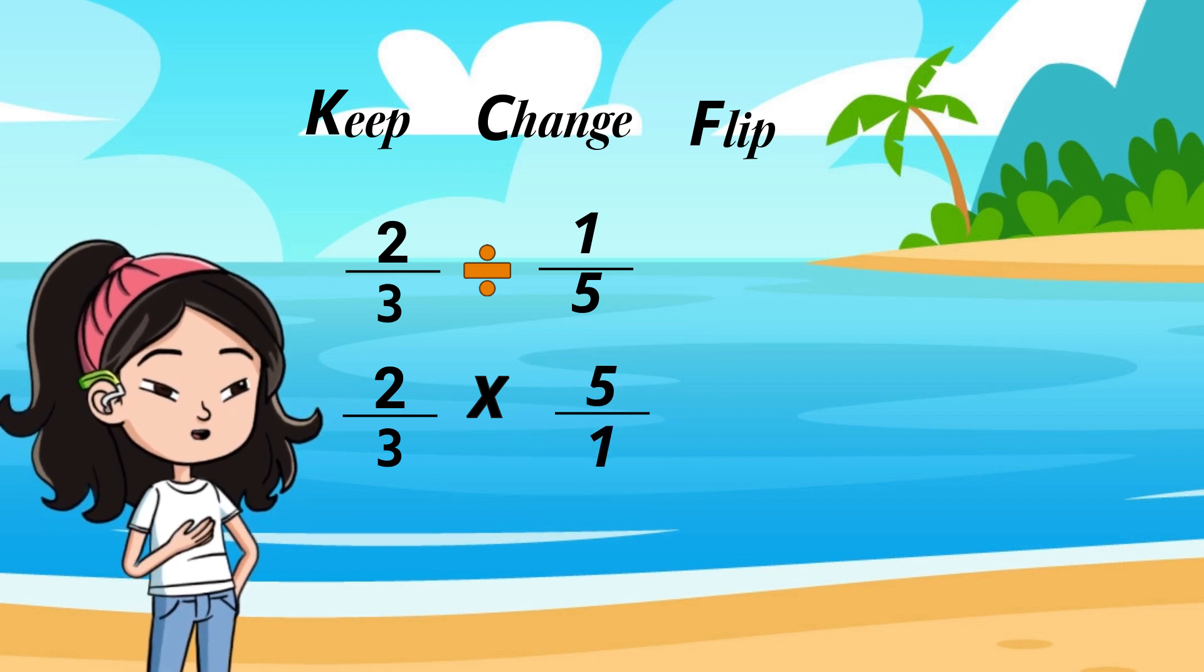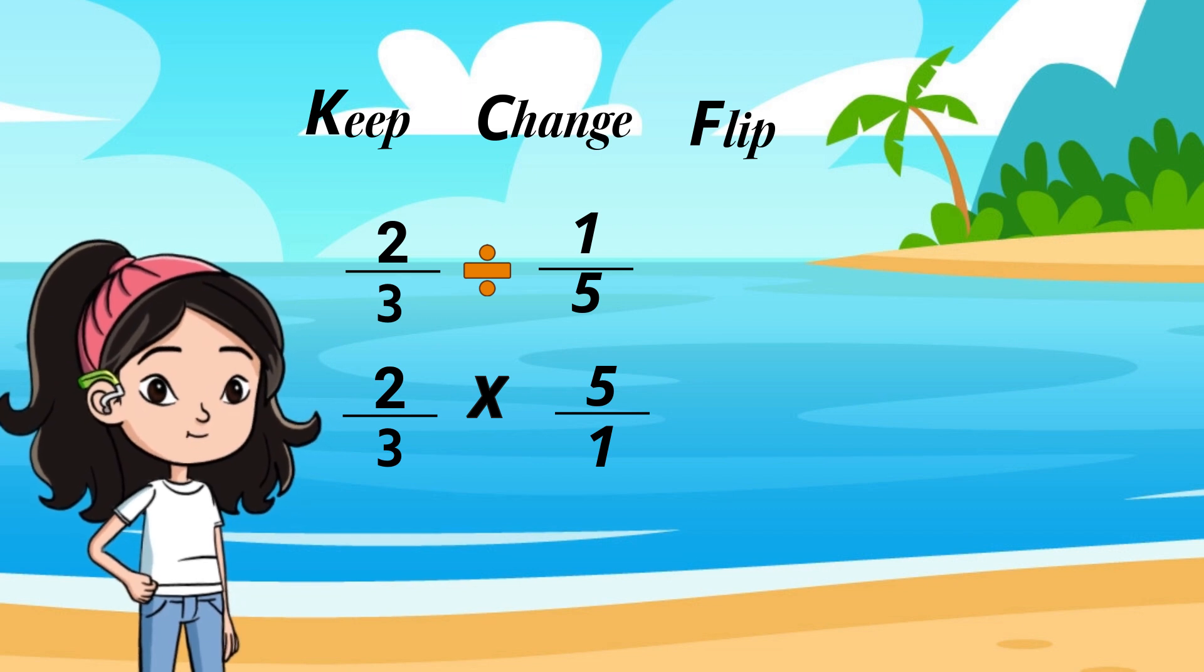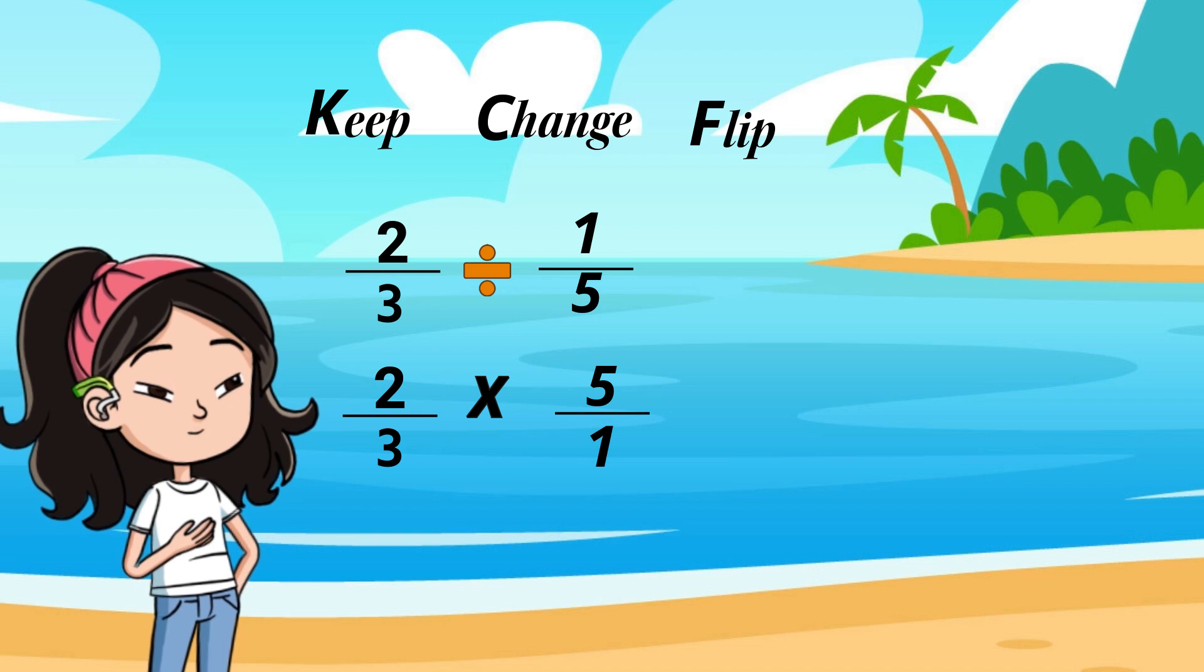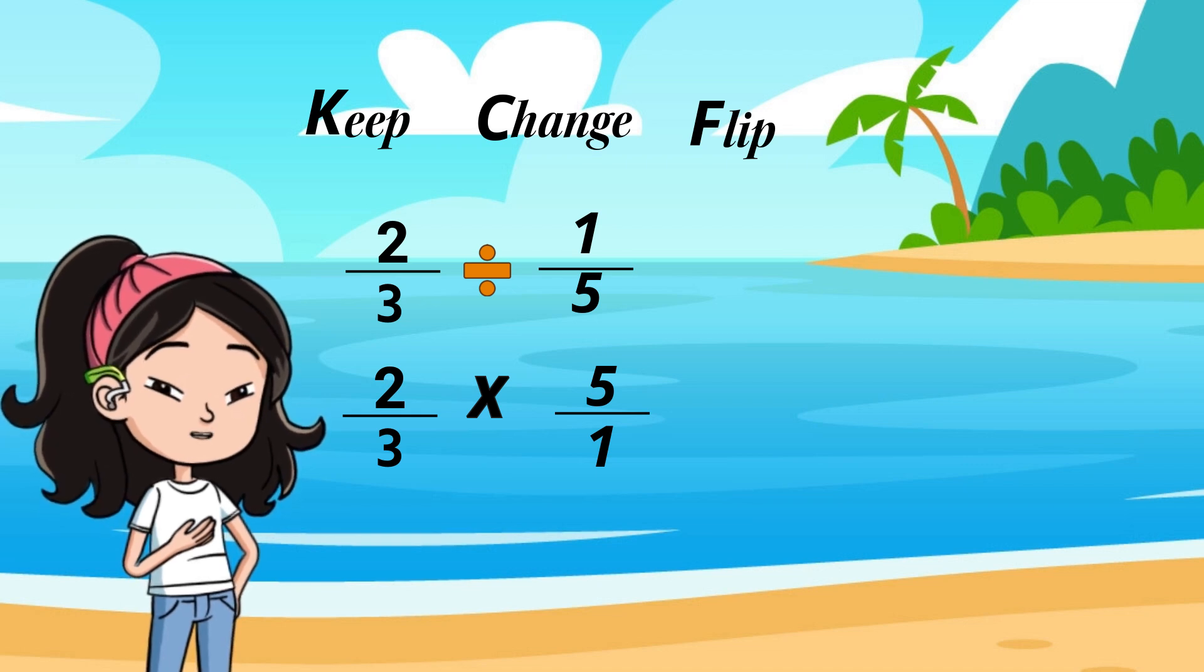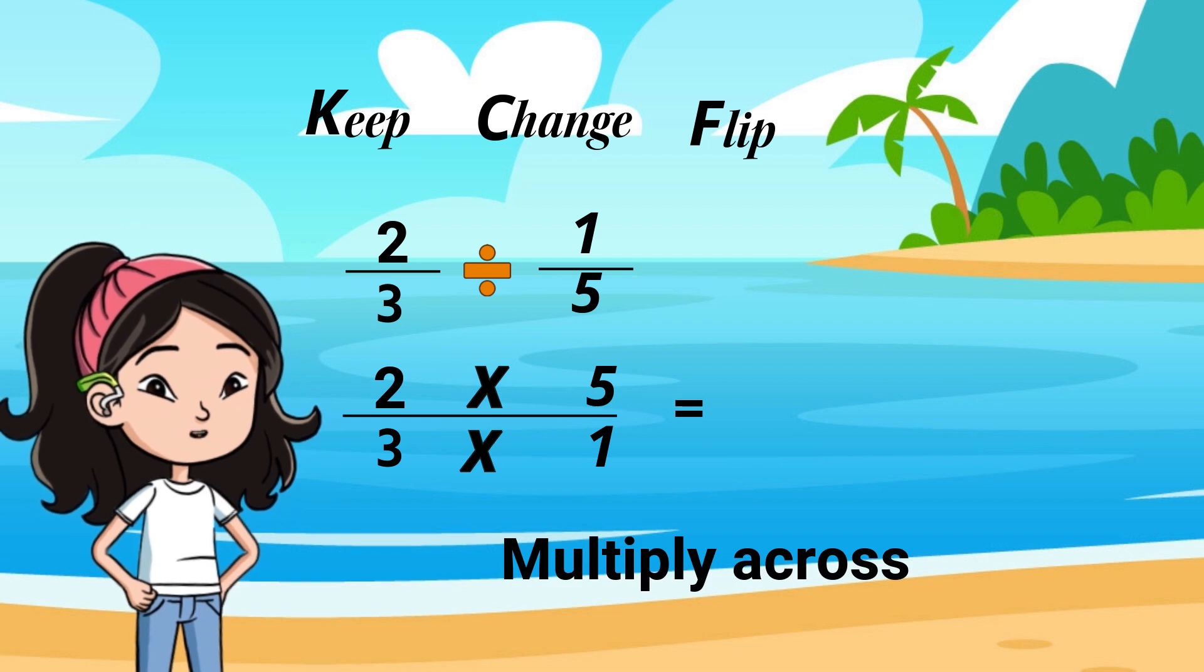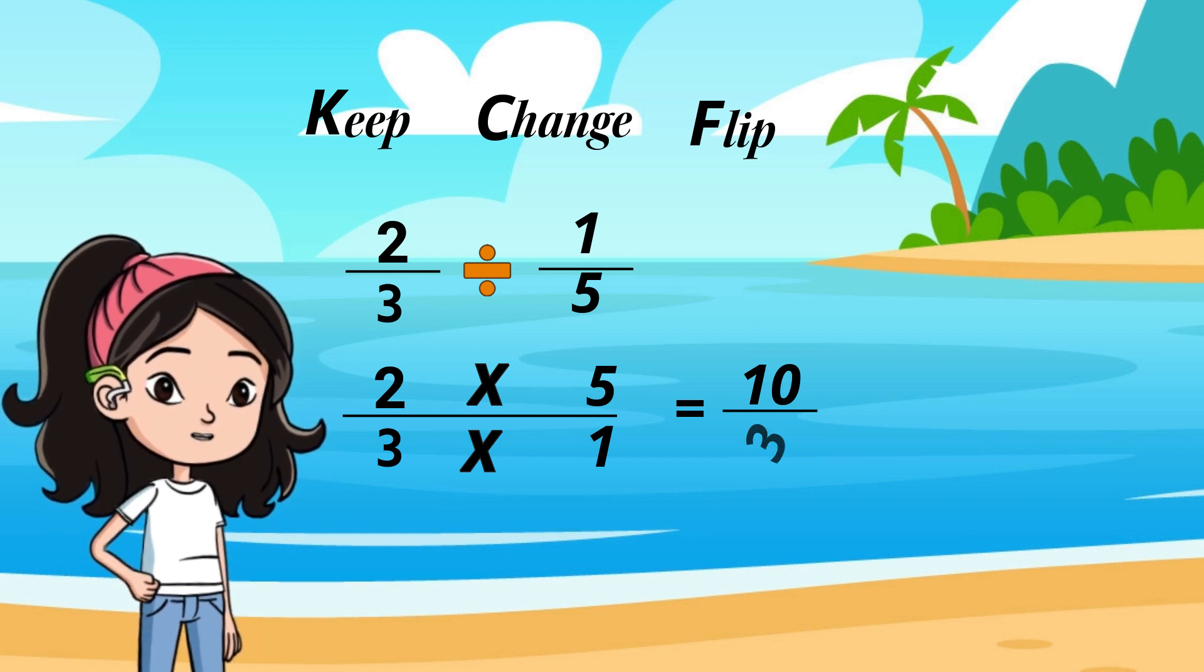Multiplying by 1 fifth is the same as dividing by 5 over 1. Now, all you need to do is multiply both fractions, which is great because multiplying fractions is super easy. You just need to multiply across. 2 multiplied by 5 is 10, and 3 times 1 is 3.